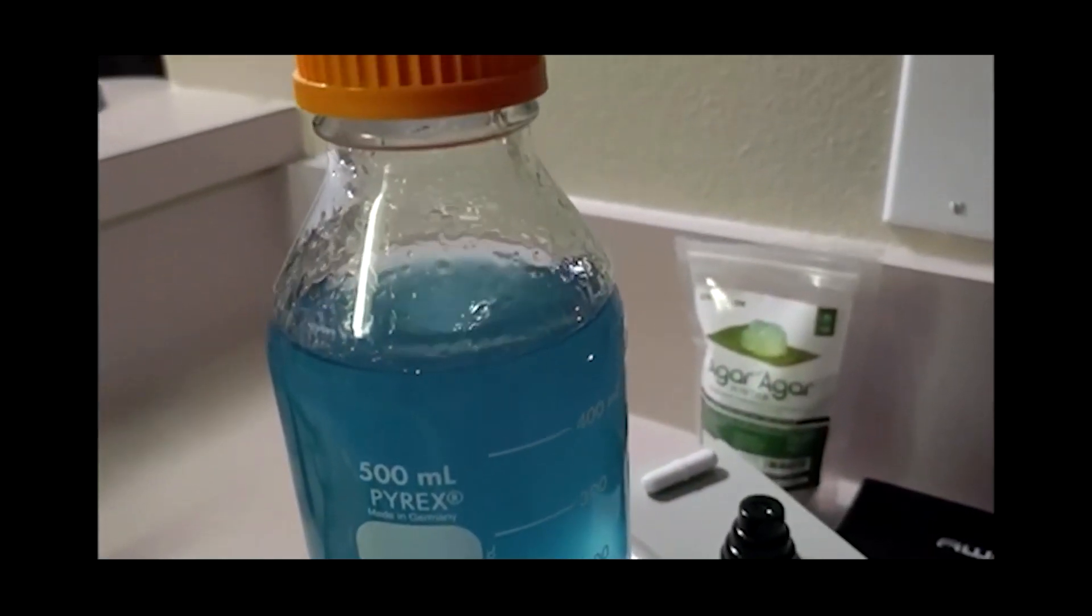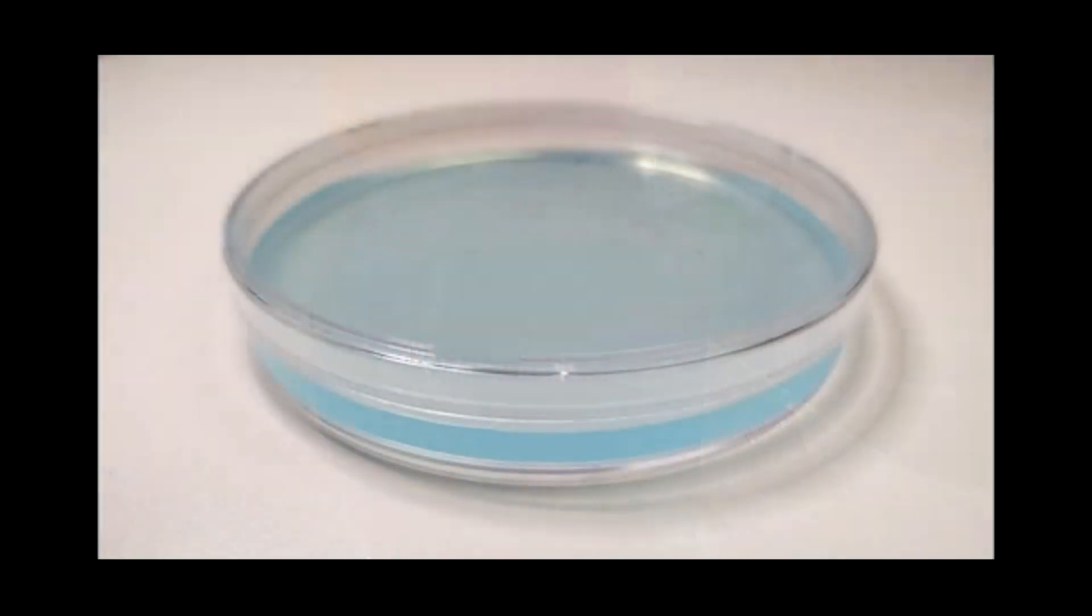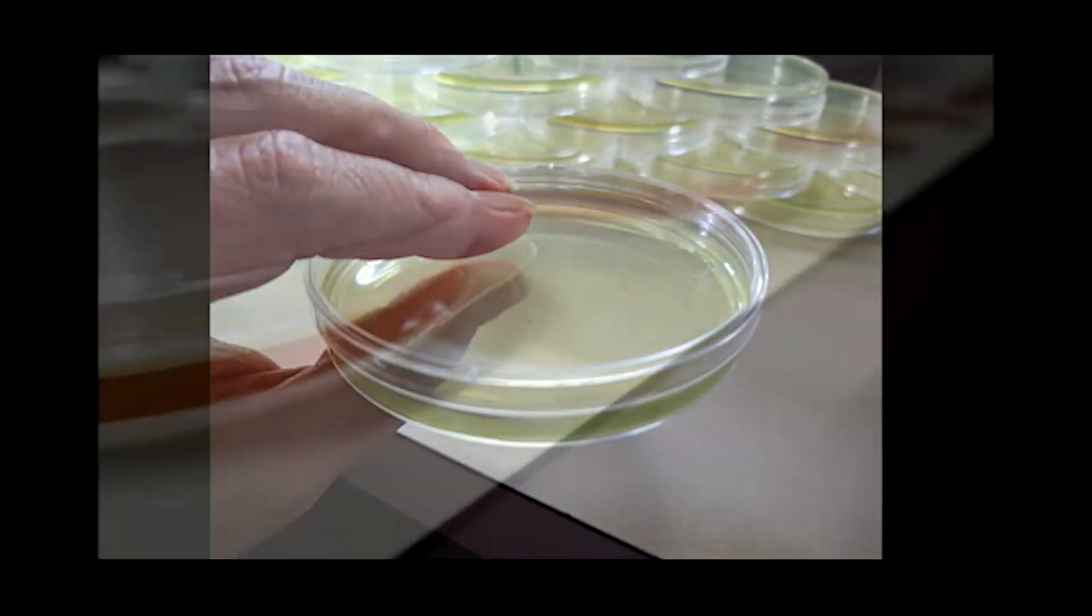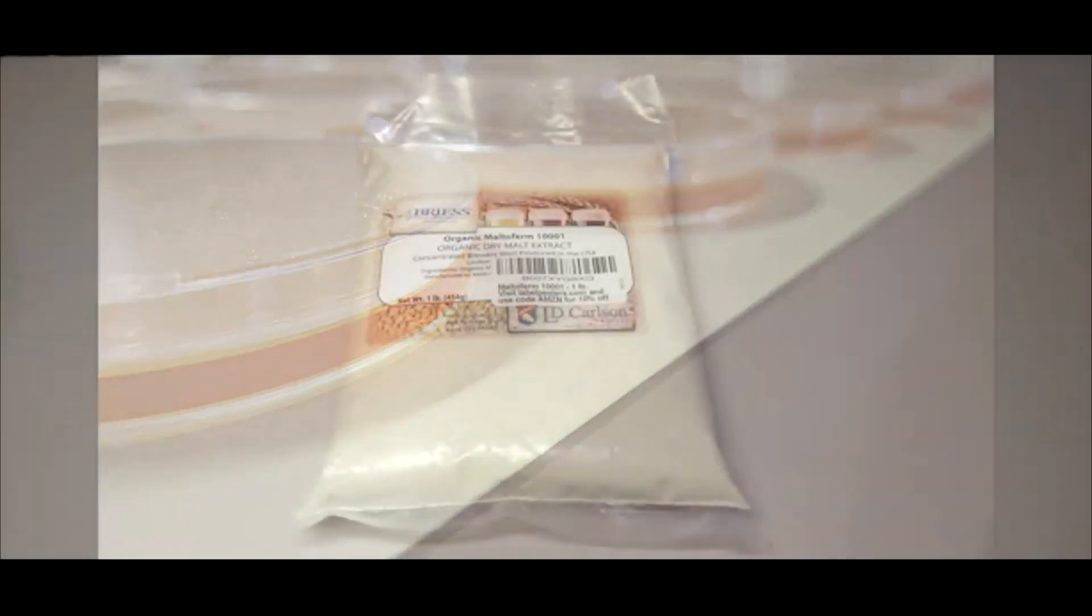When cloning or working with spores, we have found water agar to be the best recipe to start with. We then transfer to MEA plates, then a final transfer to MYA gives us the rhizomorphic growth we desire. There seems to be some confusion around malt extract and light malt extract.